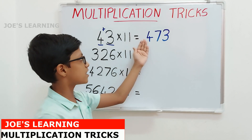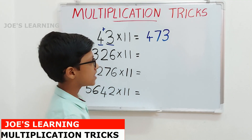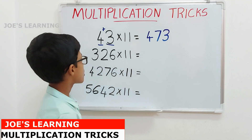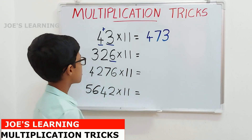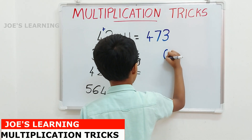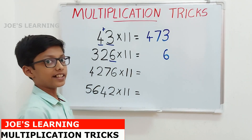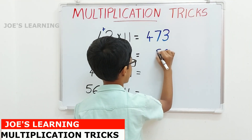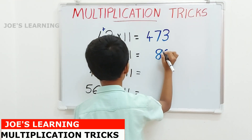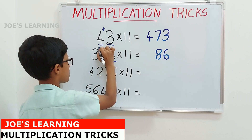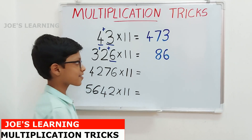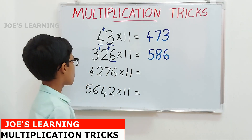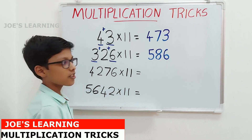So 43 × 11 equals 473. Now let us move on to the example 326 × 11. First we look at the last digit, which is 6, so we write down 6 as the last digit of our product. Then to find the next digit, we add 6 and 2, which equals 8, so we write down 8. Now to find the next digit, we add 2 plus 3, which equals 5, so we write down 5.